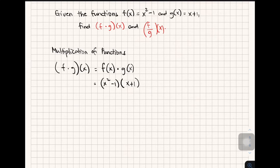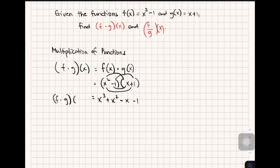As you can see, we have two binomials, so we use the FOIL method. First terms: x squared times x gives x cubed. Outer terms: x squared times 1 gives plus x squared. Inner terms: negative 1 times x gives minus x. Last terms: negative 1 times 1 gives negative 1. Therefore, the product of f of x and g of x is x cubed plus x squared minus x minus 1.